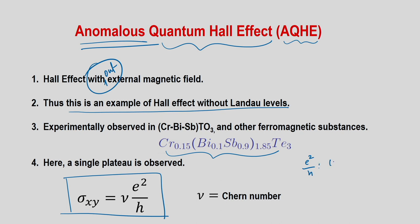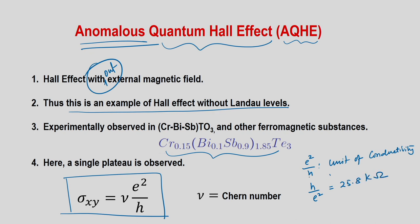The Hall conductivity is sigma_xy = nu·e²/h, where nu is the Chern number. The quantity e²/h defines the unit of conductivity; its inverse, approximately 25.8 kilo-ohms, is a familiar resistance unit used in metrology. The microscopic parameters h and e together define this unit of resistance. So sigma_xy = C·e²/h where C is the Chern number.